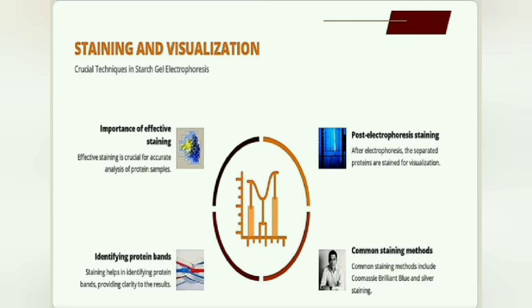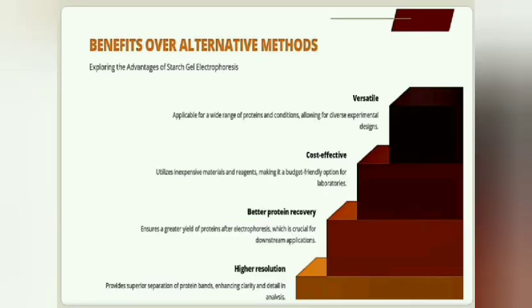Common staining methods include Coomassie Brilliant Blue and silver staining. Benefits: Starch gel electrophoresis is applicable for a whole range of proteins.